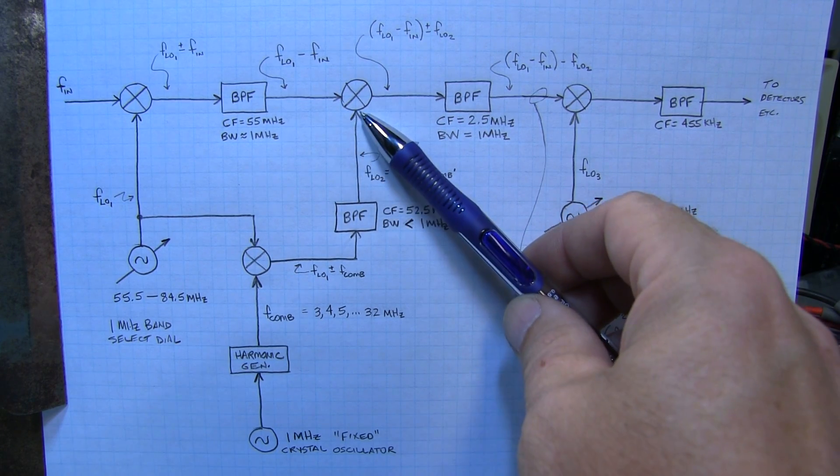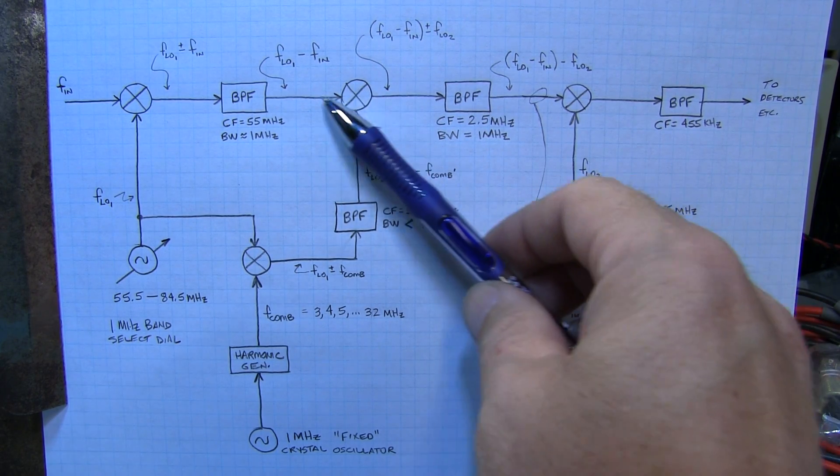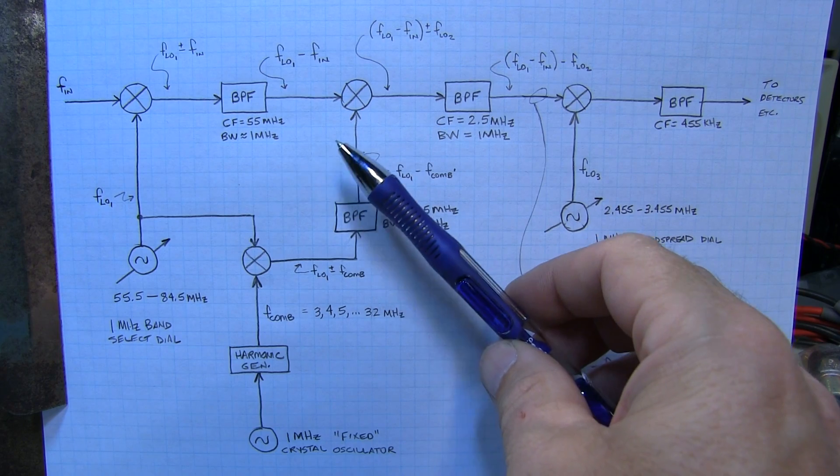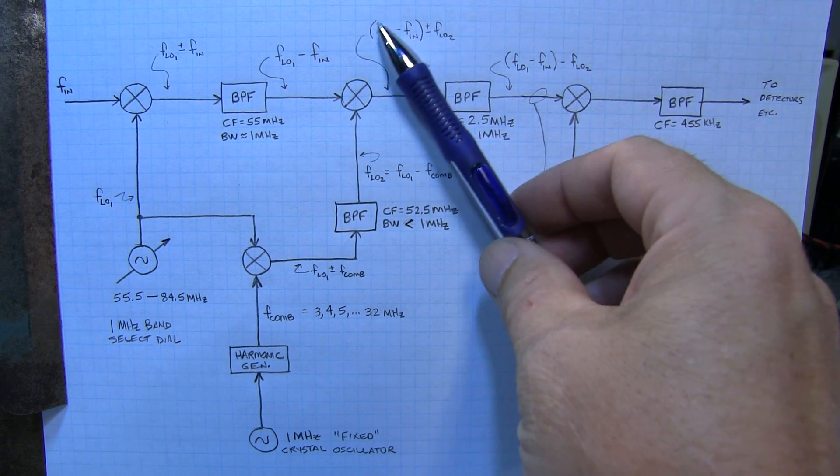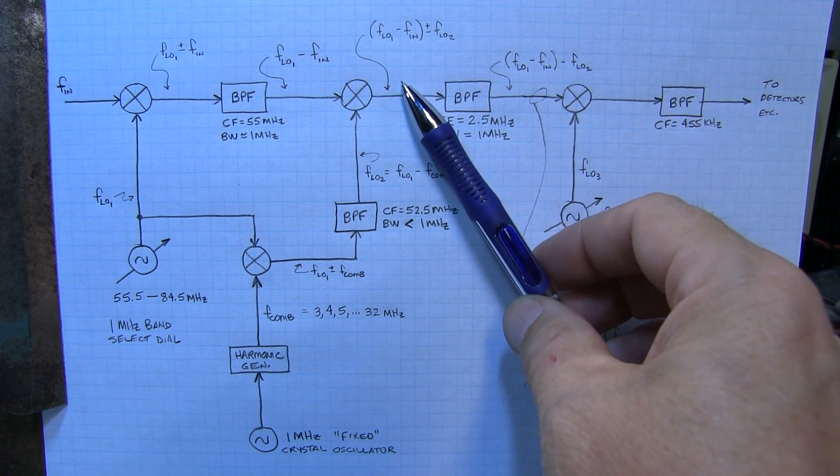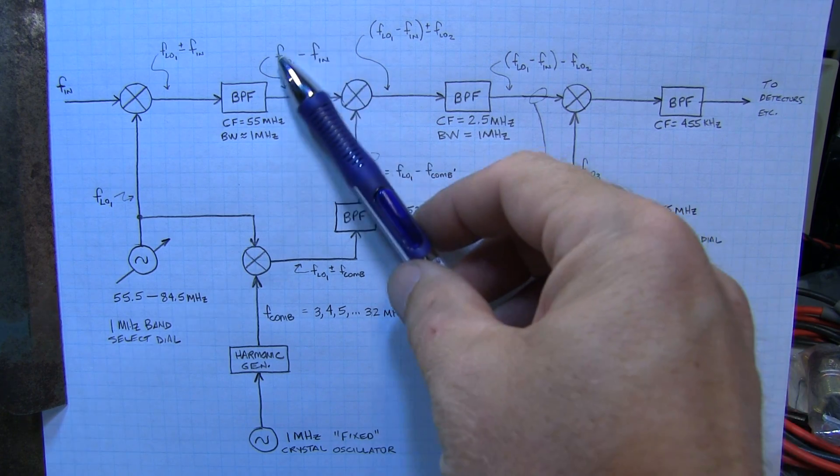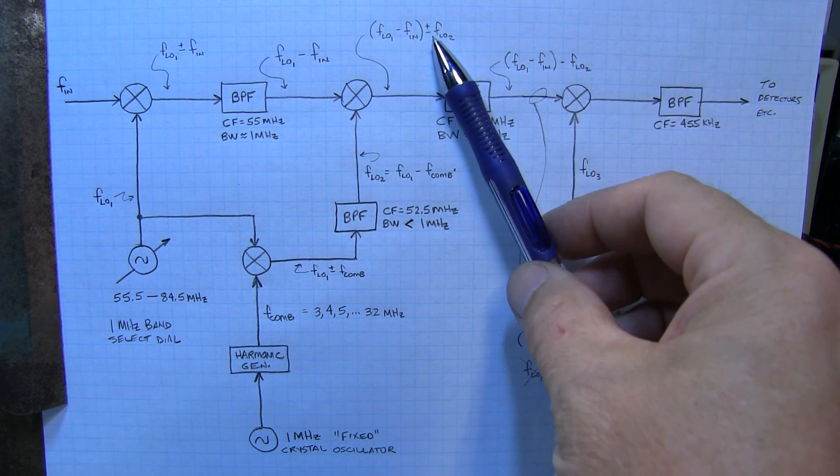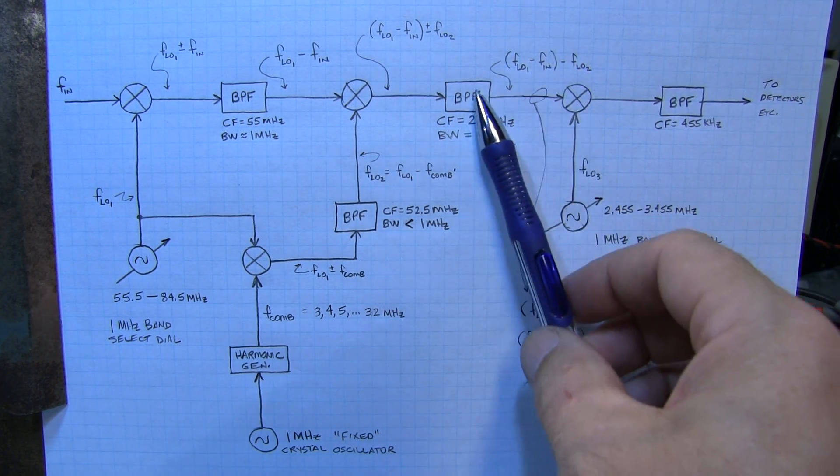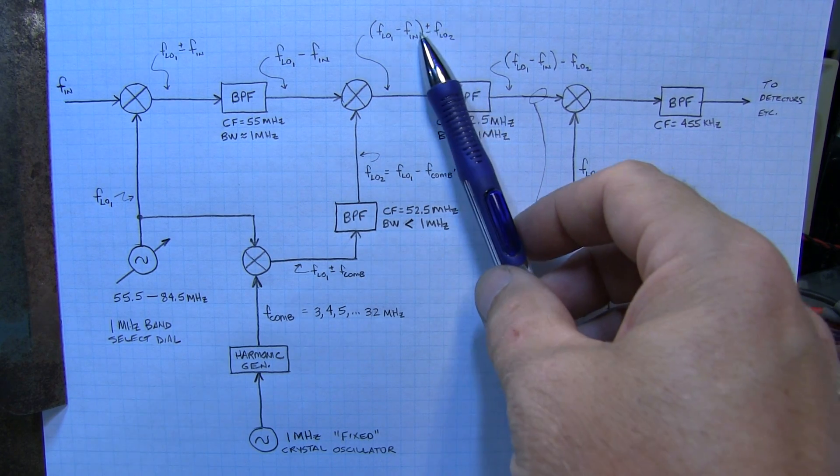That becomes our second LO and we use that to mix with the output from the first IF filter, which creates essentially another set of sum and difference frequencies. This signal right here.